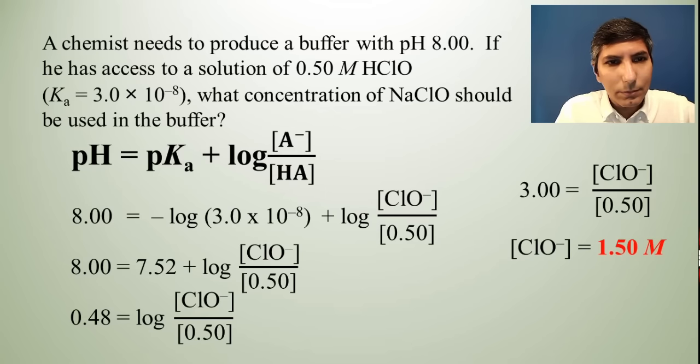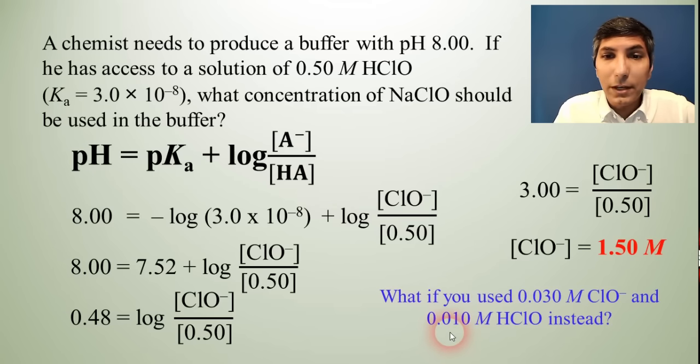So what would happen if we just changed the concentrations and maintained the same ratio? What if instead of using 1.5 molar base and 0.5 molar acid, we just used solutions that were more dilute, like 0.03 molar hypochlorite and 0.01 molar hypochlorous acid? Would that give us the same pH?